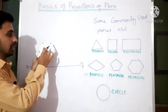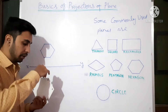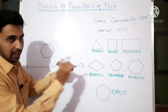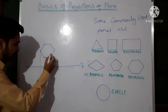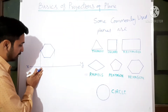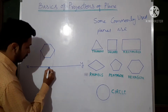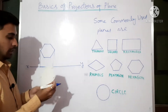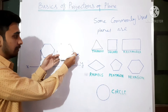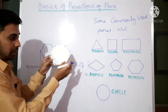If this plane is in the VP, then if you see from the top, only one line will be visible. That line we will draw here. So if the plane is in the vertical plane, the top view will come on the XY line. If the plane is in front of VP, however much it is in front, that much it comes down.